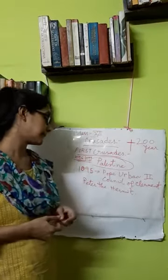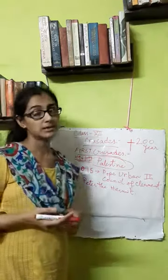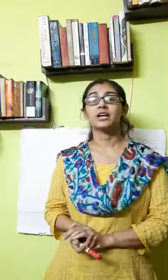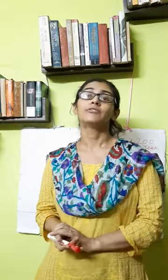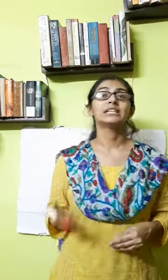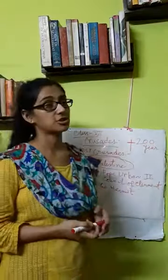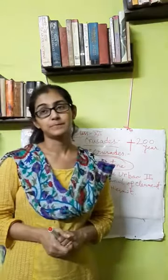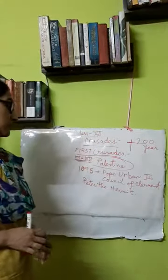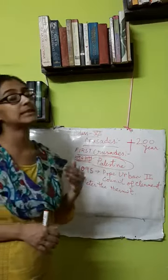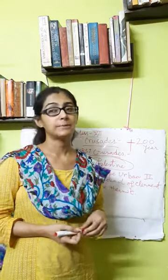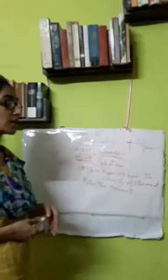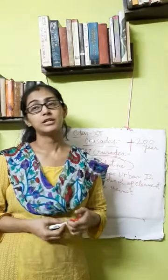Since gaining back Palestine was their main motive, and the Christians were successful in achieving it, we can say the Christians won the first crusade and were in a better position. However, after winning, they also began a massacre of the Turkish Muslim population — just as the Turkish Muslims had earlier killed Christians, now the Christians were killing many Turks. Palestine came under Christian control, and Christians could freely enter for their pilgrimage.